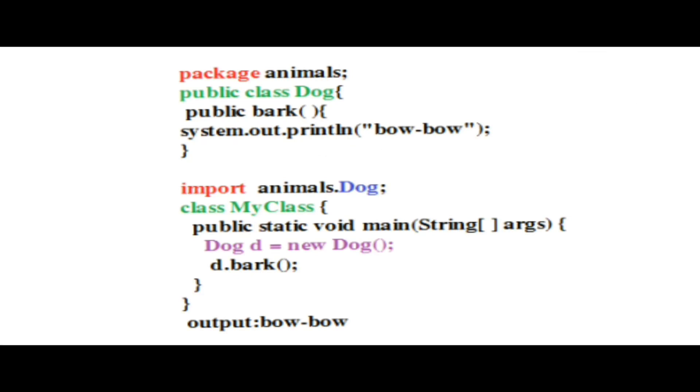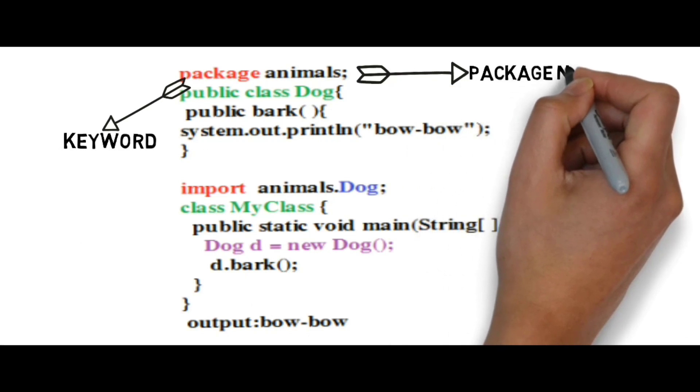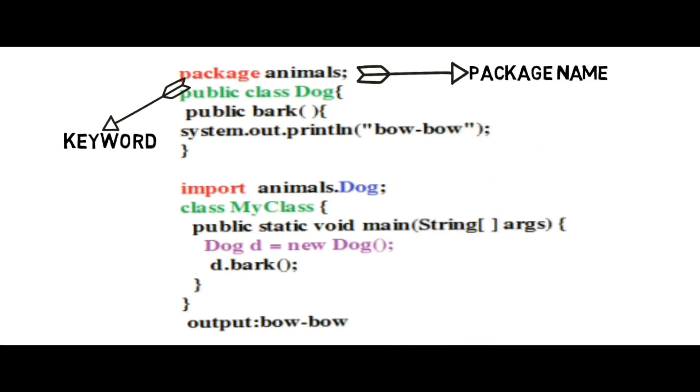Now we will look at our previous program. Here package is the keyword. Animal is the name of a package. We have created a Dog class. Bark is our method name. We have written the output statement which prints the behavior of a dog.